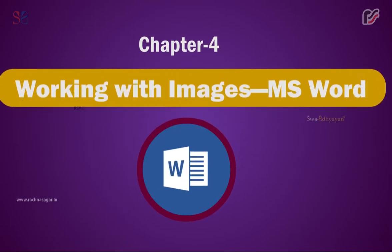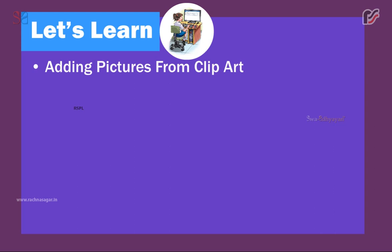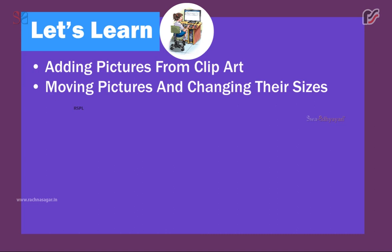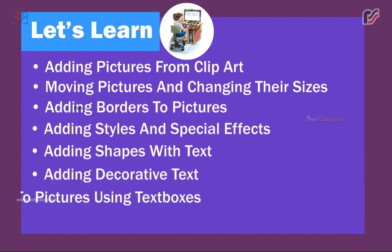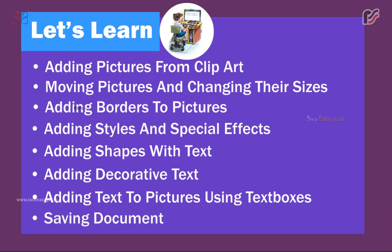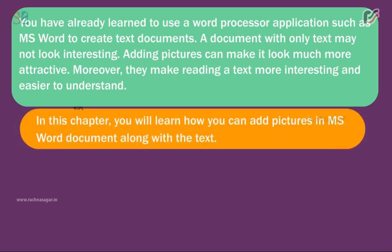Chapter 4: Working with Images in MS Word. In this chapter, we will learn about adding pictures from Clipart, moving pictures and changing their sizes, adding borders to pictures, adding styles and special effects, adding shapes with text, adding decorative text, adding text to pictures using text boxes, and saving documents. You have already learned to use MS Word to create text documents. A document with only text may not look interesting — adding pictures can make it look much more attractive and easier to understand.